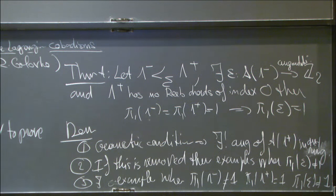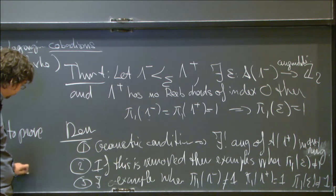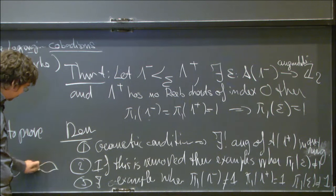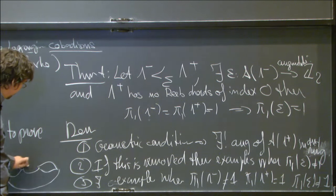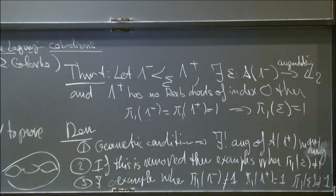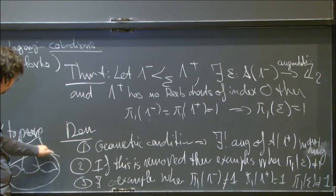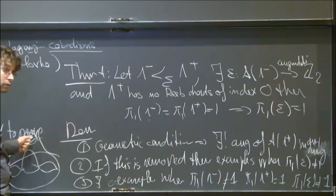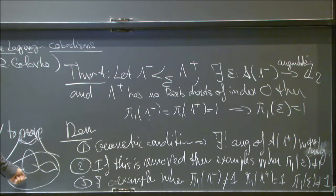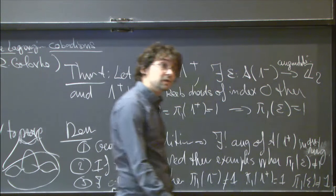The example is the following: take a Legendrian torus which is a spin of the trivial Legendrian torus, and attach a two-handle to it. This gives a cobordism to a Legendrian sphere (the Whitney sphere). The Whitney sphere is simply connected, the original torus is not, and the cobordism is not simply connected.